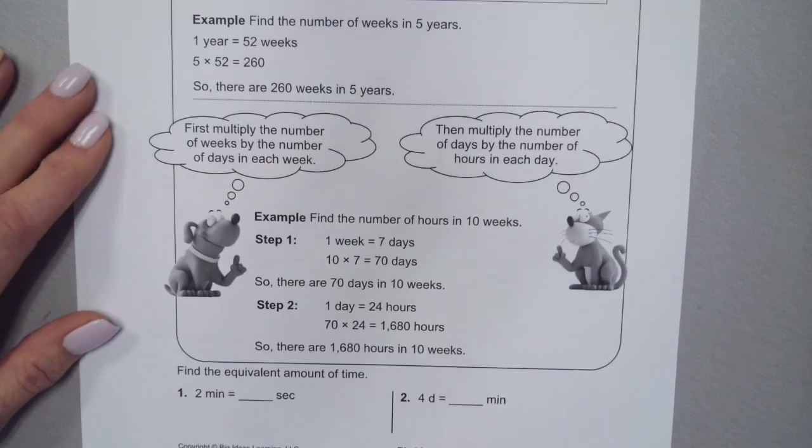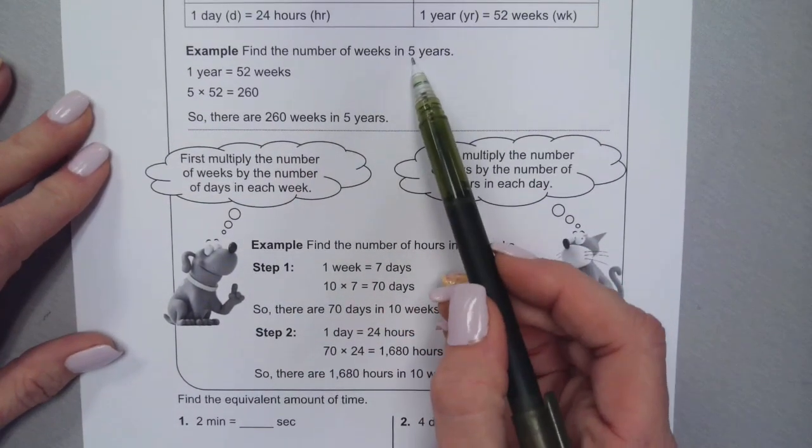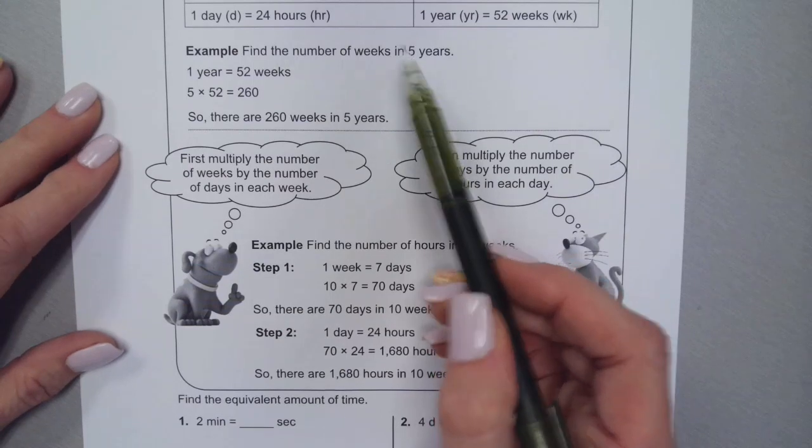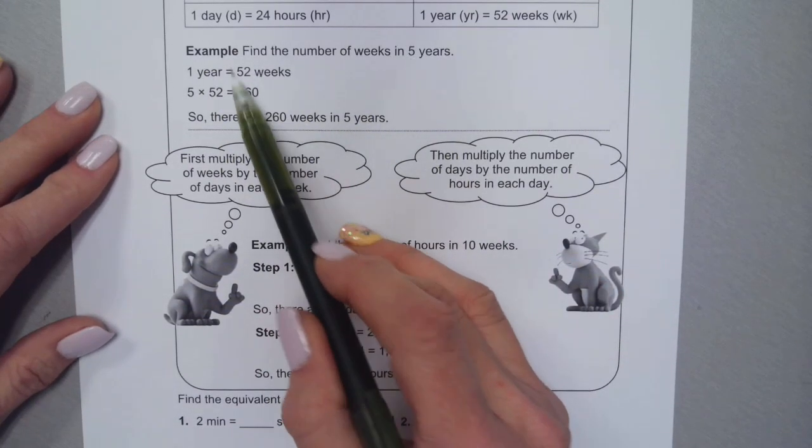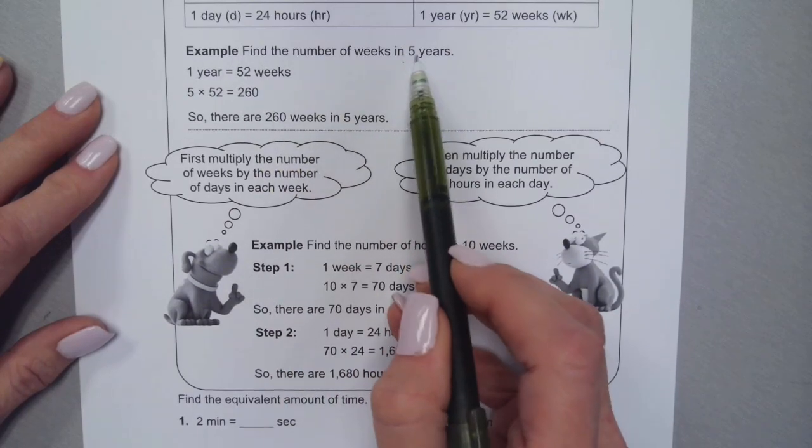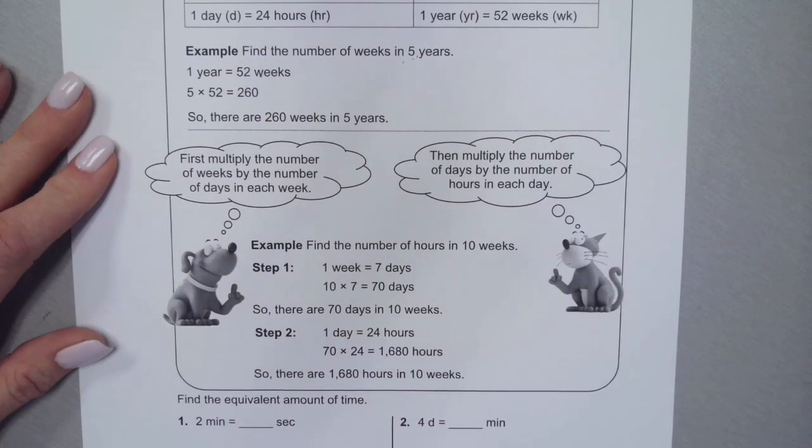So if I'm trying to find out how many weeks there are in five years, I know that one year is 52 weeks, so I would have to multiply 52 by five and I would get 260. So there are 260 weeks in five years.